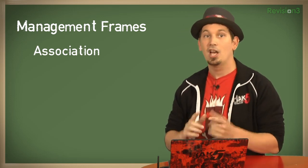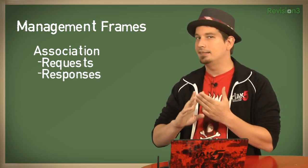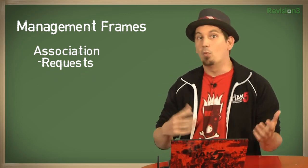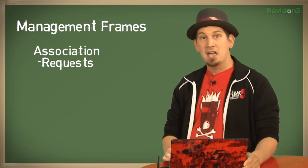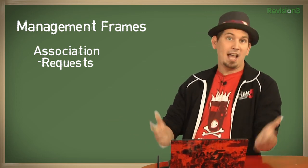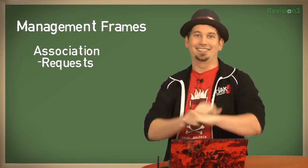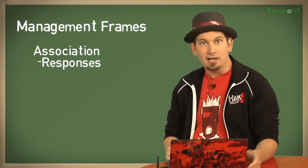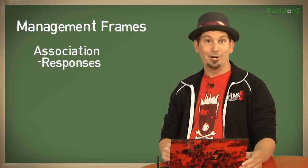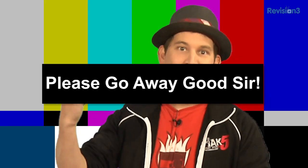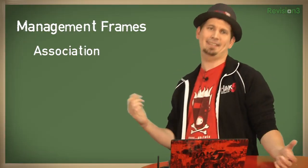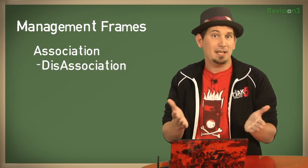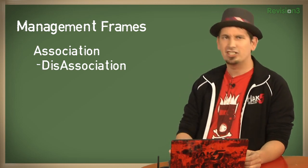The next type of management frame is association, and these come in three flavors: association requests, responses, and disassociation. Association requests are simply a frame sent from one station to another asking if they can be friends — among other things, can you allocate some memory for me, and let's synchronize our watches so we can more effectively communicate. An association frame is typically followed by an association response, which will either be acceptance — sure, let's be friends — or rejection. When two stations want to say goodbye, they just send a disassociation frame, which is a polite way to do it as it allows the other party to unallocate memory and perform other cleanup functions.